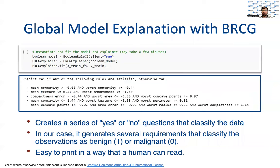In our case, BRCG generates several requirements that classify the observations as benign or malignant. These requirements are easy to print out in a way that a human can read. You can see here, the first requirement is: if the mean concavity is greater than negative 0.65 and the worst concavity is less than or equal to negative 0.44, then the mass is benign. Another combination indicating benign is if the mean texture is less than or equal to 0.45 and its worst smoothness is less than or equal to negative 1.30. Since we are not doctors, this might not make a lot of sense to us, but now we know what questions to ask.